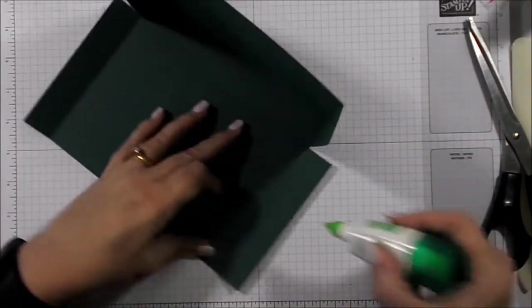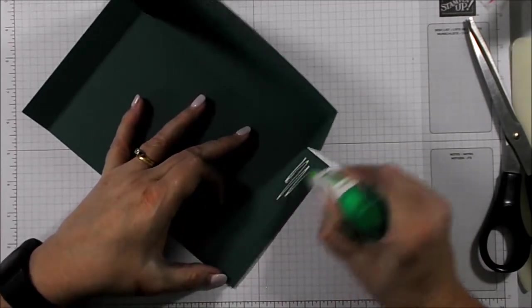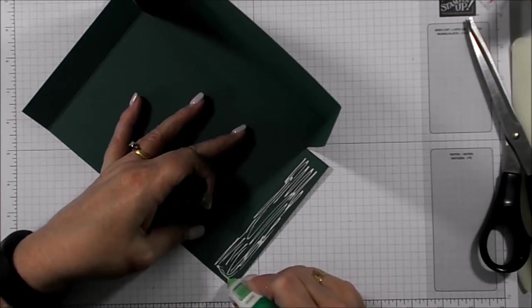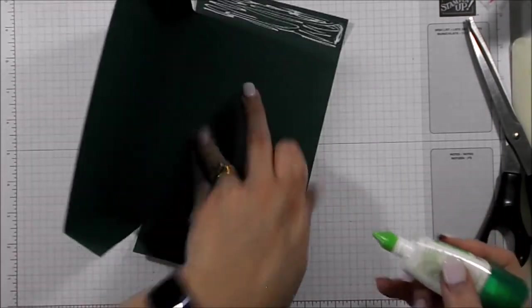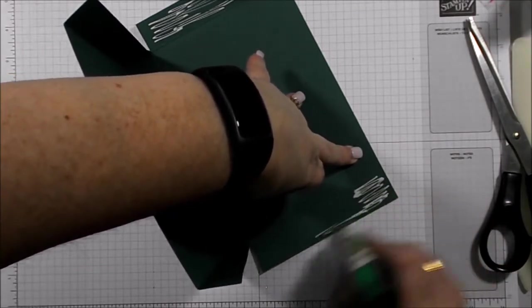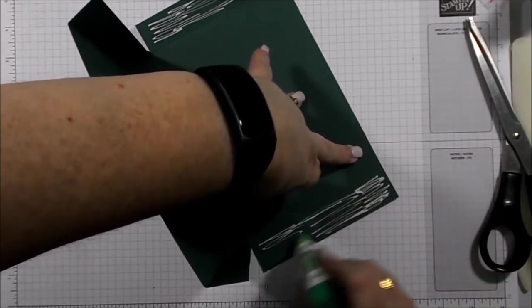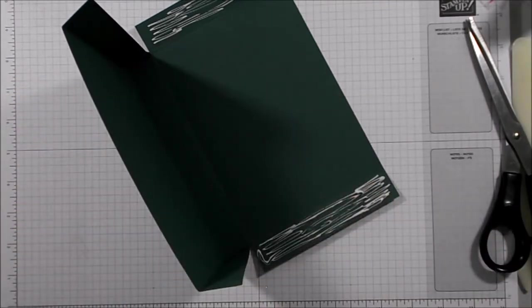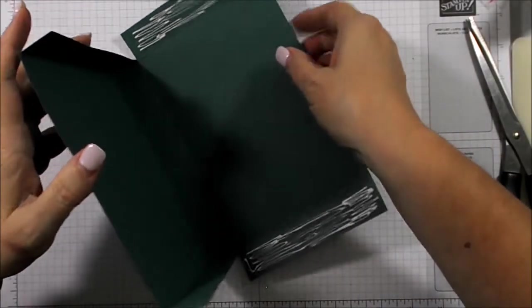Now, in with the Tombow again, and put it all the way up the inside of the shorter piece of cardstock. I am putting quite a bit on this, because I want to make sure it's not going to separate.